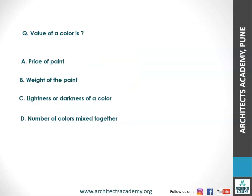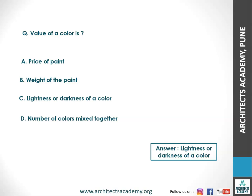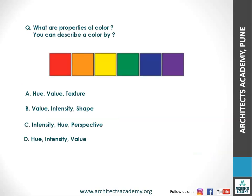Next, the value of a color is the lightness or darkness of a color. Remember this term — value — because this question was asked in previous years' exams. The next question: what are the properties of a color? You can describe a color by option D — that is hue, intensity, and value. These are the three important properties of any color.